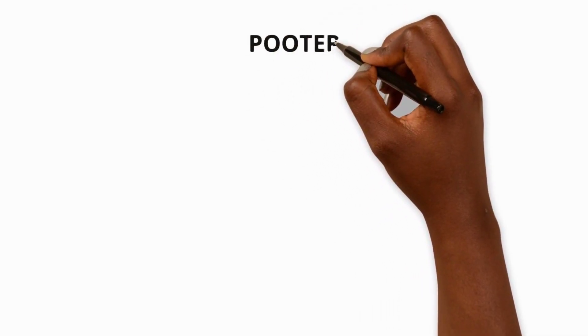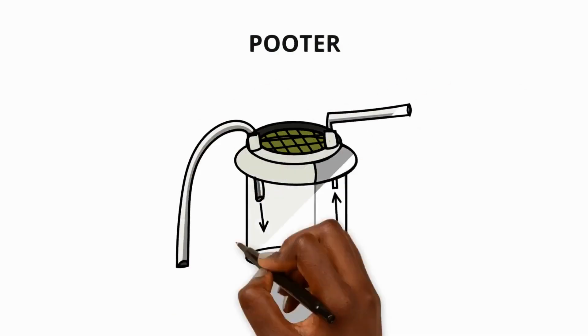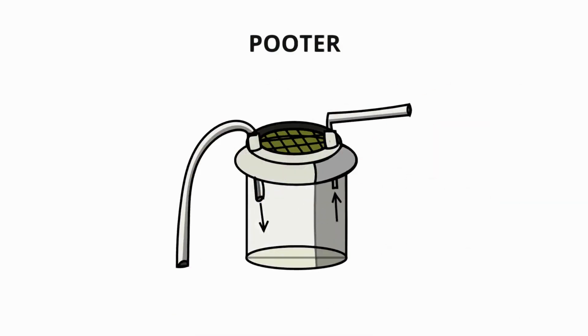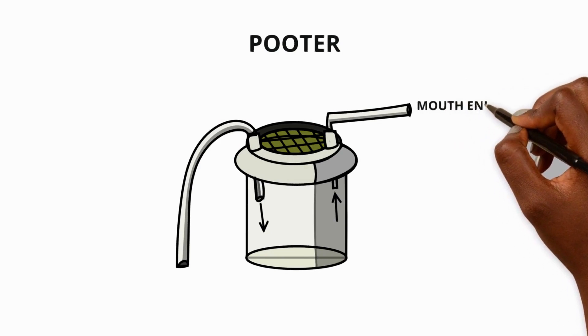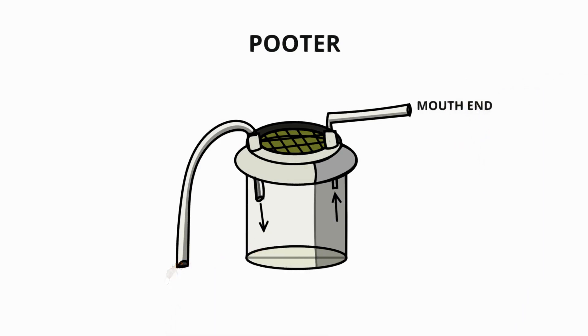The pooter is another tool that you can use to observe invertebrates. This is a small clear container with two tubes attached to it. One tube goes in your mouth and the other is placed near the invertebrate you want to observe. You can then suck gently on the tube with your mouth which will suck the invertebrate into the container. This allows you to observe the invertebrate up close without harming it.